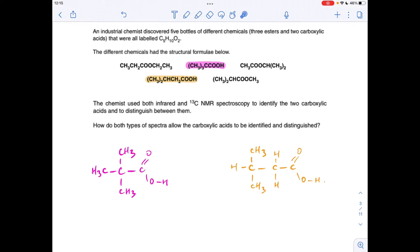Okay, so we'll go through the answers now. As you can see, I've highlighted the two carboxylic acids and I've also drawn them up in the relevant colors. So it's infrared spectroscopy that allows you to identify them from the esters and that's because of the presence of the OH bond in the molecules.